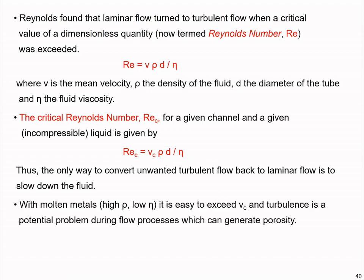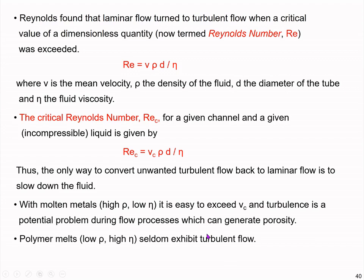Both types of flow are required in different cases. With molten metals having high density and low viscosity, it is very easy to exceed the critical velocity and have turbulence, making porosity a common problem in metals processing. In polymer processing, however, polymer melts have low density and high viscosity, so they do not tend to exhibit turbulent flow frequently — the flow remains quite laminar.